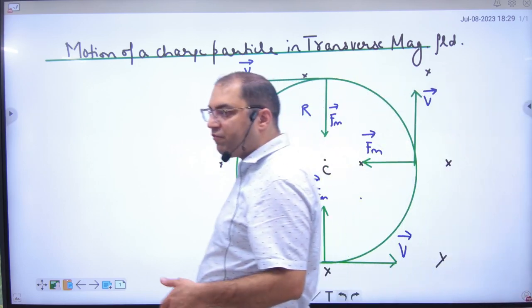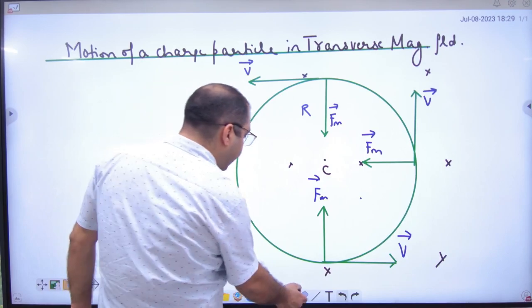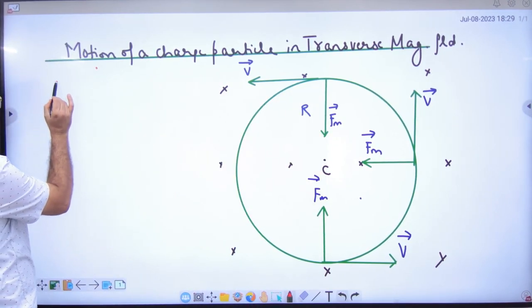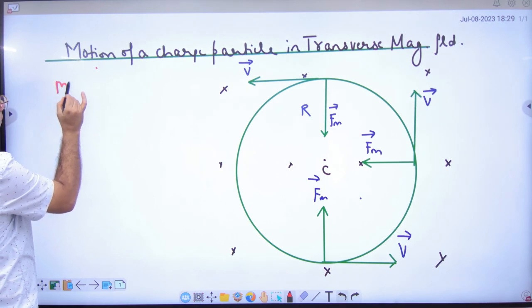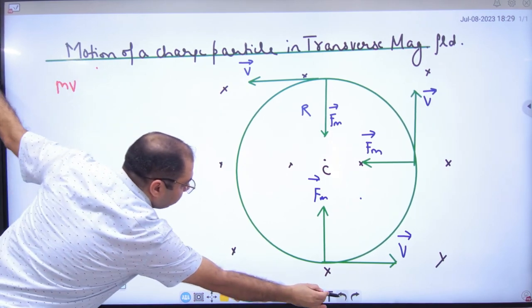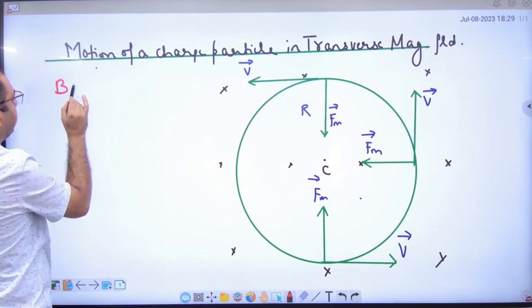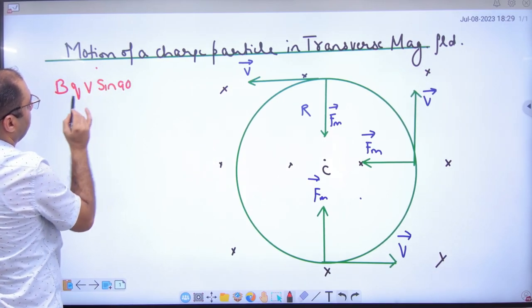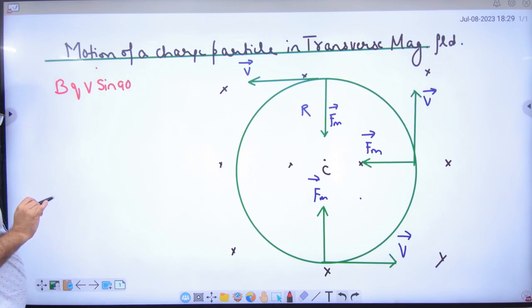So the particle will move in a radius of R. So if we want to remove R radius, what will the magnetic force be? BQV sin 90. Because what is B and V angle? 90.